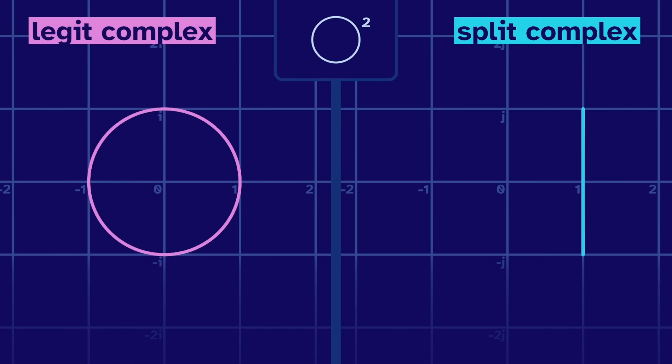The shape's the same with legits, but the shape is lame in the splits. Why is it straight? A simple line. Let's calculate. See what we find. This part's real for any square.